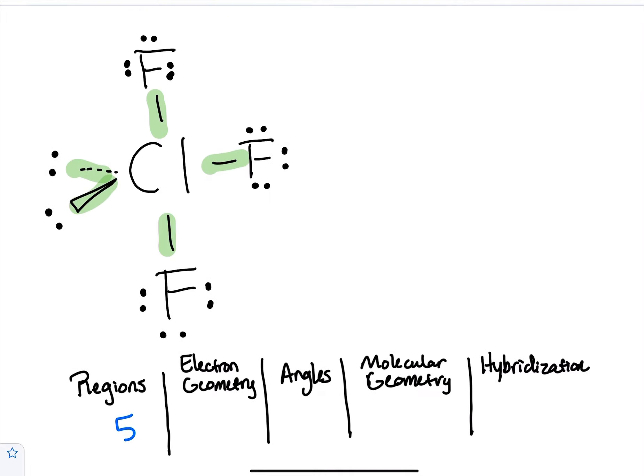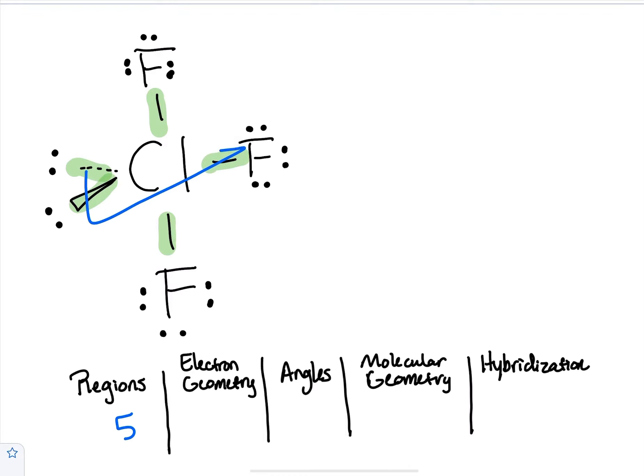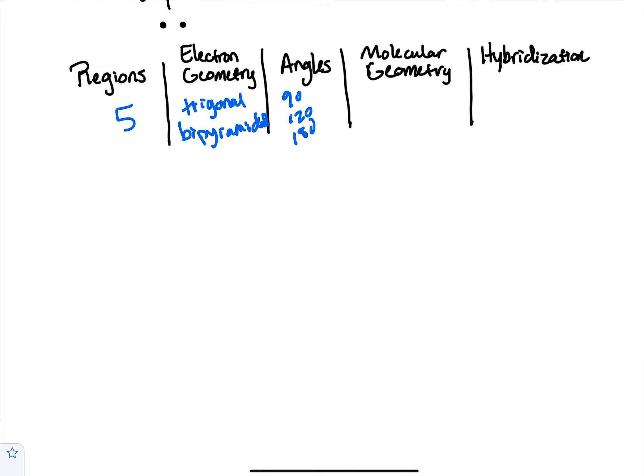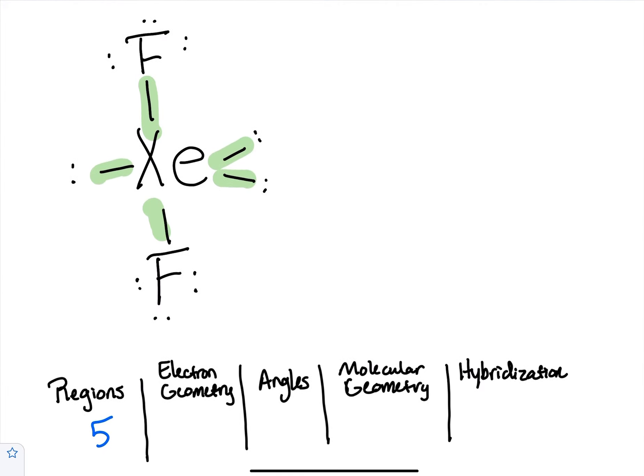I still have five regions, this one's drawn a little bit easier to make it easier to see the triangle again and then the up down. Trigonal bipyramidal, 90, 120, 180, and then we keep going and we still have those five regions.